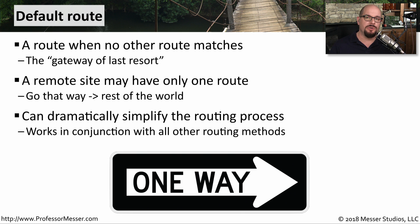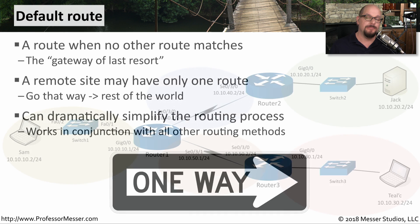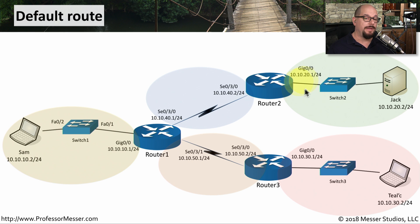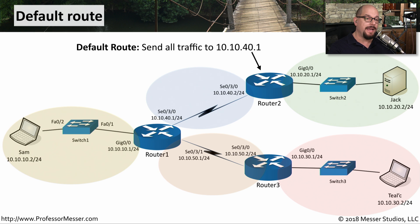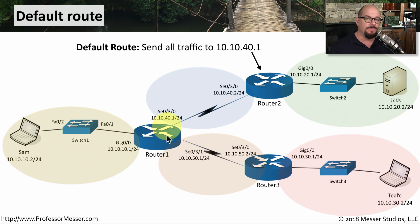If you have a network with a number of internal routes and a lot of external routes, a default route can simplify the process of building your routing table. Instead of listing out all of the external routes, you simply add a default route and send all external traffic whenever it doesn't match anything on the inside. Looking at Jack's network from our earlier diagram, where there's only one way out and one way in, it would be perfect to add a default route into router 2 that sends any outbound traffic to the next hop at 10.10.40.1. When Jack sends traffic to that router, the router simply looks at the default route and sends the traffic on its way.